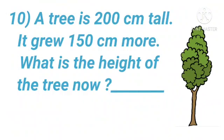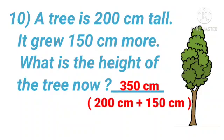Now, number 10. A tree is 200 centimetres tall. It grew 150 centimetres more. What is the height of the tree now? So, what we will do? Yes, addition. And we will get 350 centimetres.